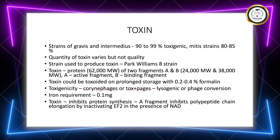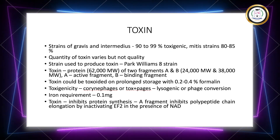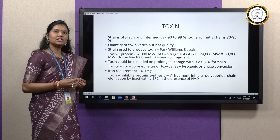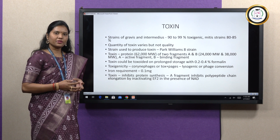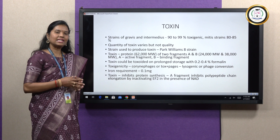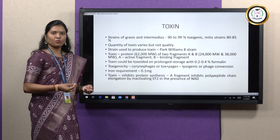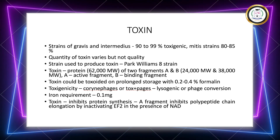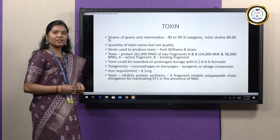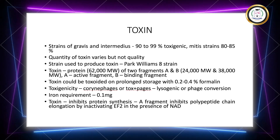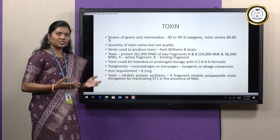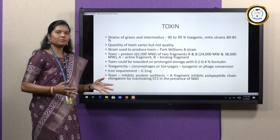Coming to the toxin, McLeod has classified Corynebacterium diphtheriae into three groups: gravis, intermedius, and mitis, based on the clinical severity of the disease they produce. Generally, gravis strains produce the most intense form of disease; intermedius produces a medium form, while mitis strains produce the mildest form. Almost all strains produce a powerful exotoxin: 90 to 99 percent of gravis and intermedius strains produce toxins, while mitis strains produce toxins in just 80 to 85 percent of cases. The quantity may vary among strains, while the quality of the toxin is relatively similar among all strains.